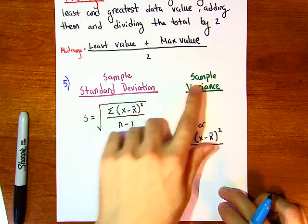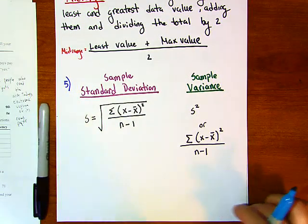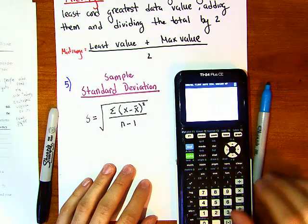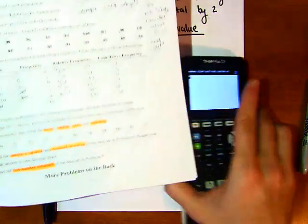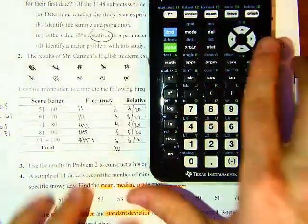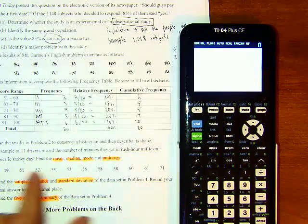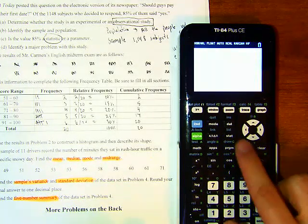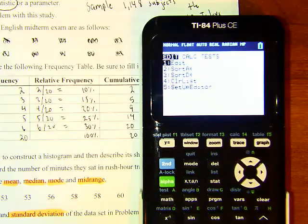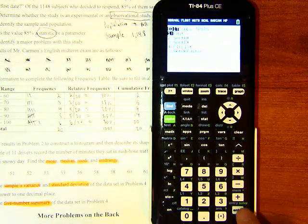For the sample standard deviation and sample variance, we'll use the calculator. Take out a TI-83 or TI-84. To enter the data values, go to STAT, then EDIT, and hit ENTER. You'll see L1 and L2 columns — plug the data values into L1.